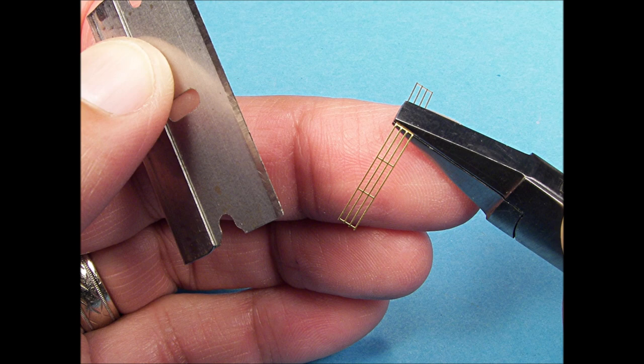To get a sharp bend at a stanchion, position the railings at the bend location inside the jaws of flat-nosed pliers and use a single-edge razor blade to bend the photo etched and get the correct angle.